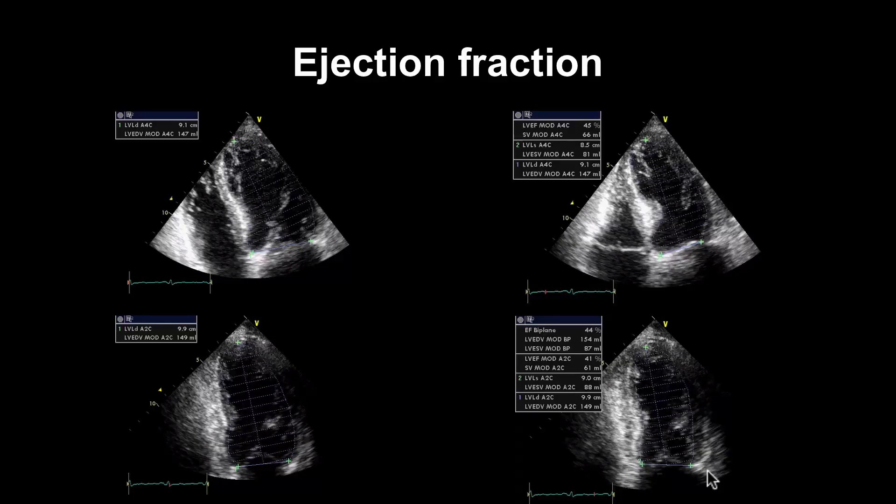We usually assess the function of the left ventricle using the ejection fraction, which is exactly what it says. It's the amount of blood ejected from the left ventricle, expressed as a percentage of its maximum volume. It's normally around 60%, but in a severely impaired ventricle it could be 30% or less.